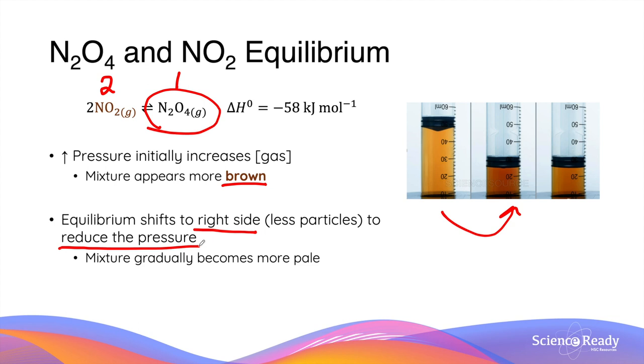It is important for you to remember how to use Le Chatelier's principle to predict the direction of equilibrium position movement. Since the equilibrium moves to the right-hand side, the concentration of the brown nitrogen dioxide decreases gradually, and that's what causes the mixture to become less brown over the duration of several seconds.